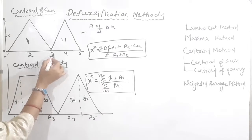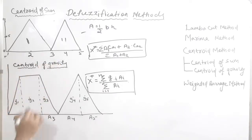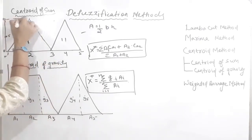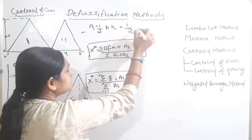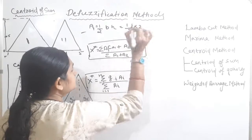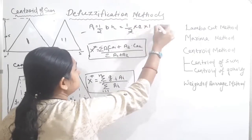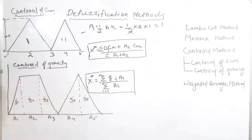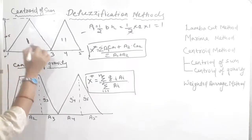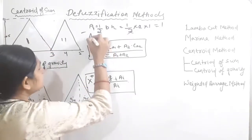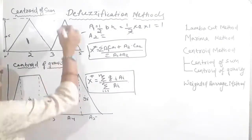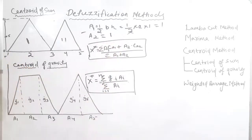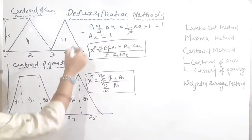For figure number one, the area is half base into height. Base is 3 minus 1, which is 2, and height is 1, so A1 equals half times 2 times 1, which is 1. For figure number two, the area is also 1: half base is 5 minus 3, which is 2, and height is 1, so A2 equals 1 as well.